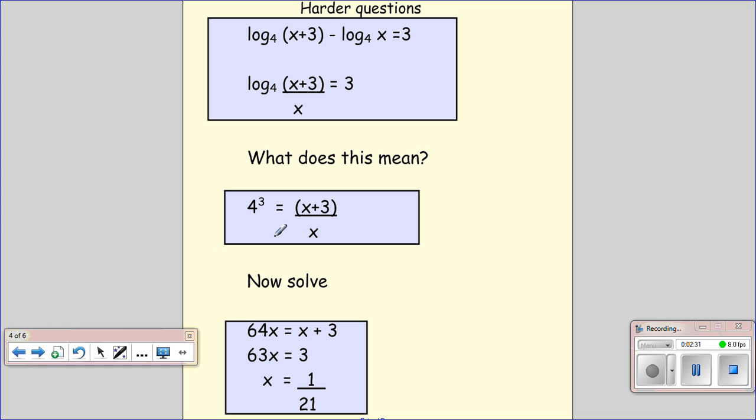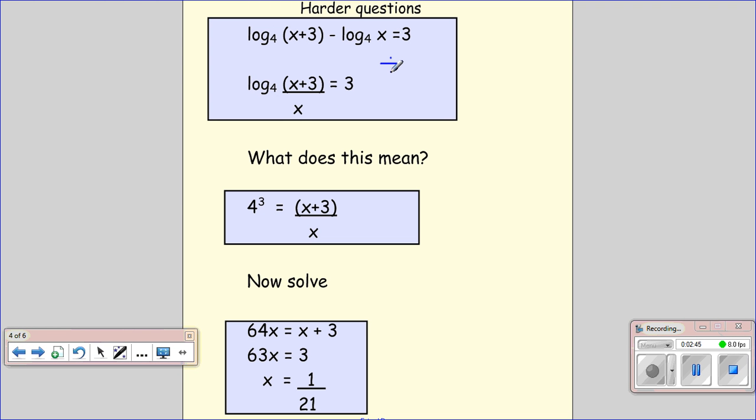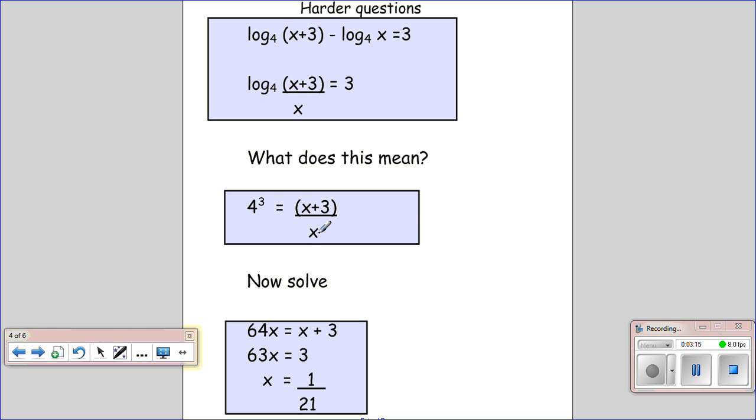Here's a harder question. We've got log in base 4 of X plus 3 minus log in base 4 of X equals 3. Hopefully you can remember that when we've got the minus, we can put them together and divide. So we have log of X plus 3 minus log of X will be the same as the log of X plus 3 divided by X. We can rewrite that. What we're actually saying is that if we have 4 to the power of 3, we will generate X plus 3 over X. These two are equivalent, they're just written in a different way.